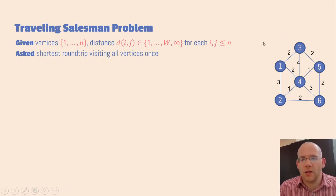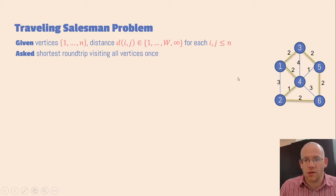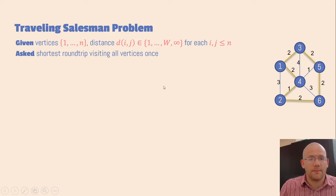In the example we can see here on the right hand side, I just indicated all the finite distances on the 6 vertices, and this is the shortest roundtrip.